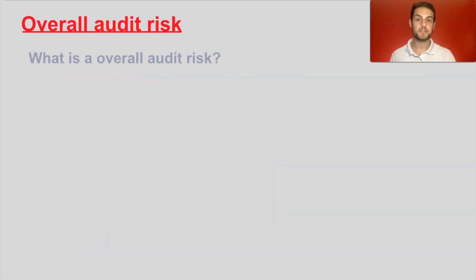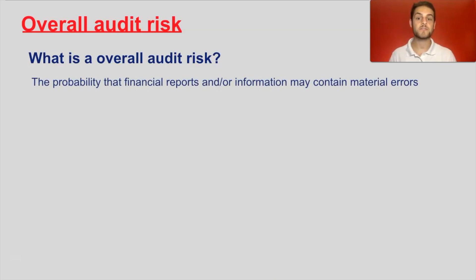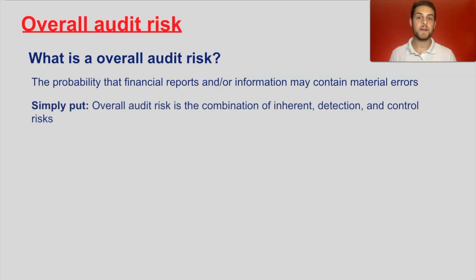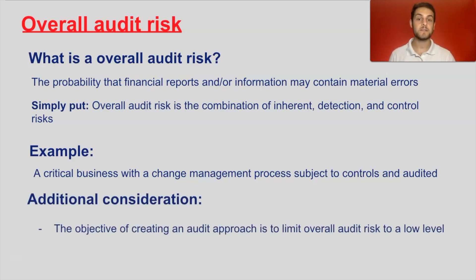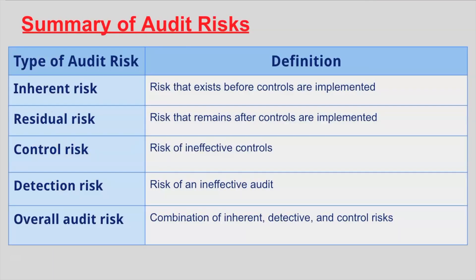Lastly, overall audit risk is the probability that financial reports and information may contain material errors. Simply put, overall audit risk is the combination of inherent, detection, and control risk. An example is a critical business with a change management process subject to controls and auditing — there may be inherent, detection, or control risk present, or a combination of all three. The objective of creating an audit approach is to limit overall audit risk to a low level.